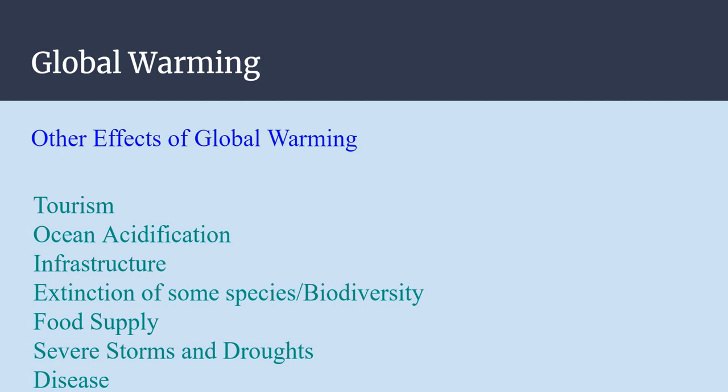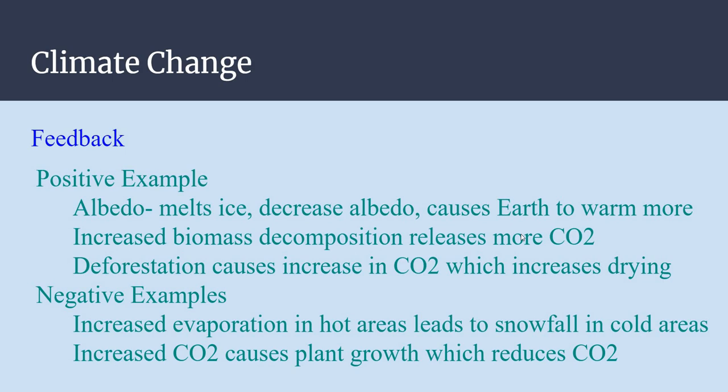So we have species that cannot simply tolerate these sort of changes. Food supply is definitely changes. Severe storms and droughts, which I think is a better way of thinking about global warming. It's easier for people to get their hands on severe weather situations and diseases. Now, we've talked before about feedback loops, positive and negative, just to remind you. Positive means we're getting further away from the set point, whereas negative means we're compensating for the stimuli to get back to the set point. Your thermostat at home would be a good example of negative feedback.